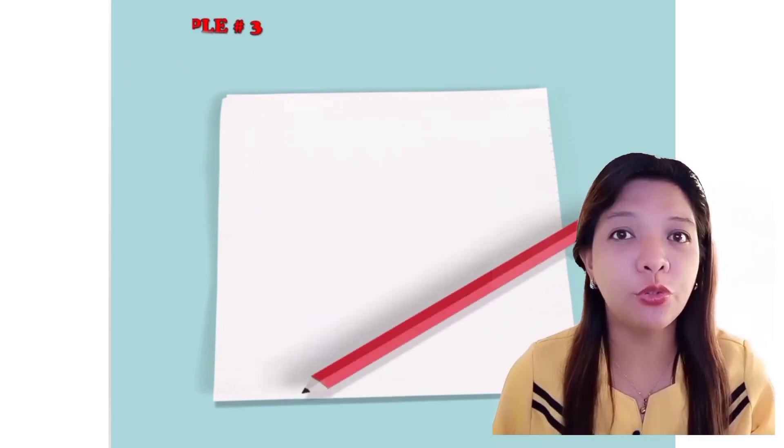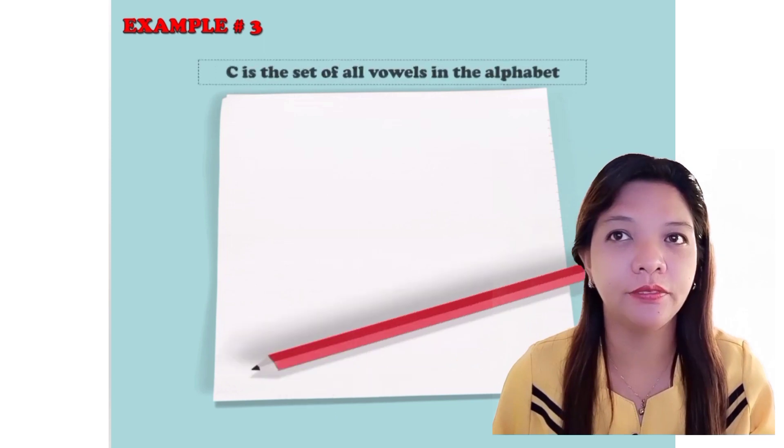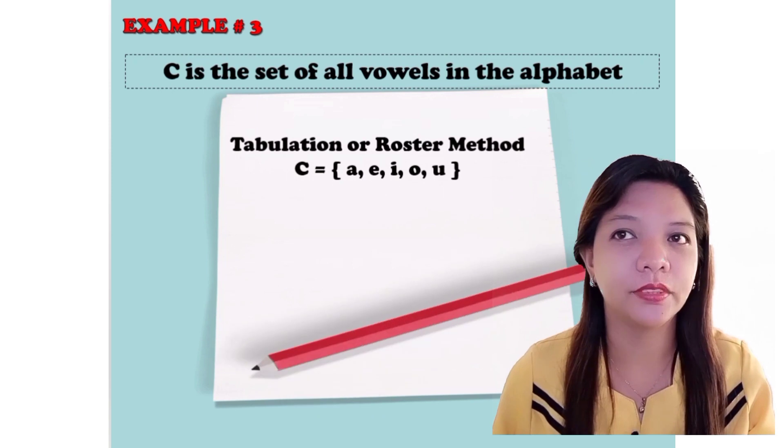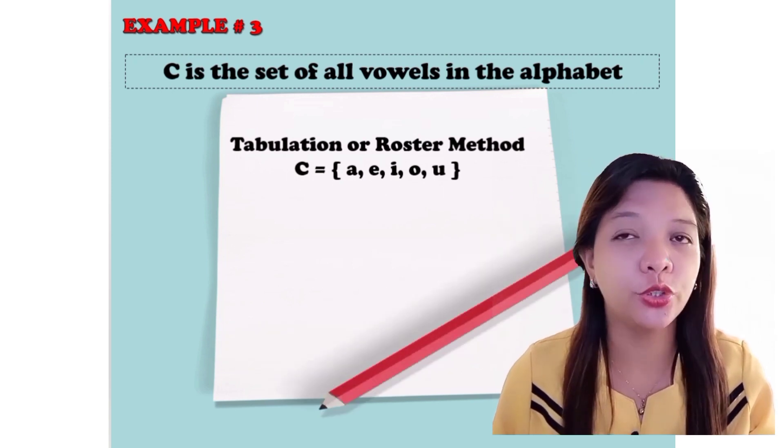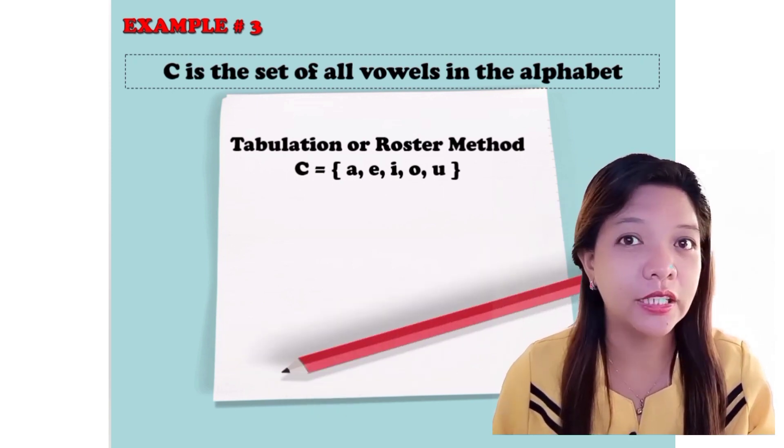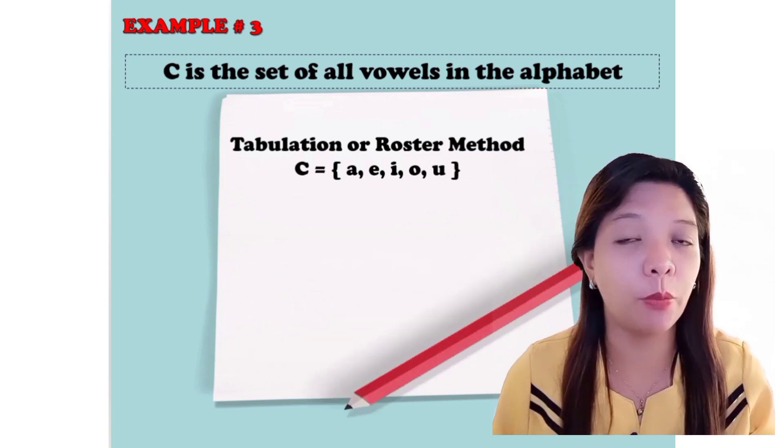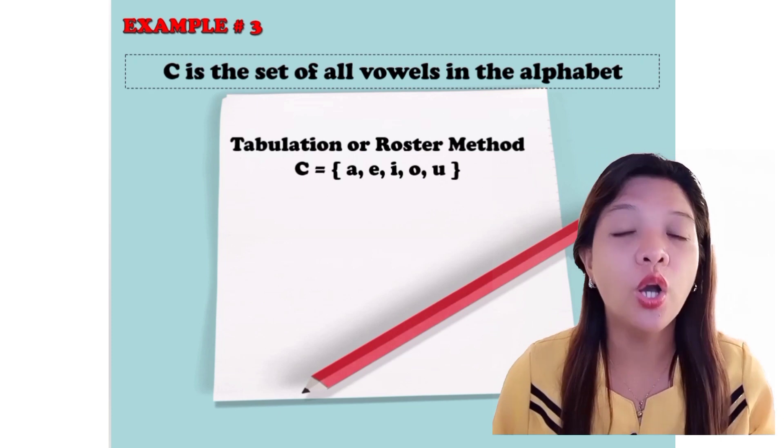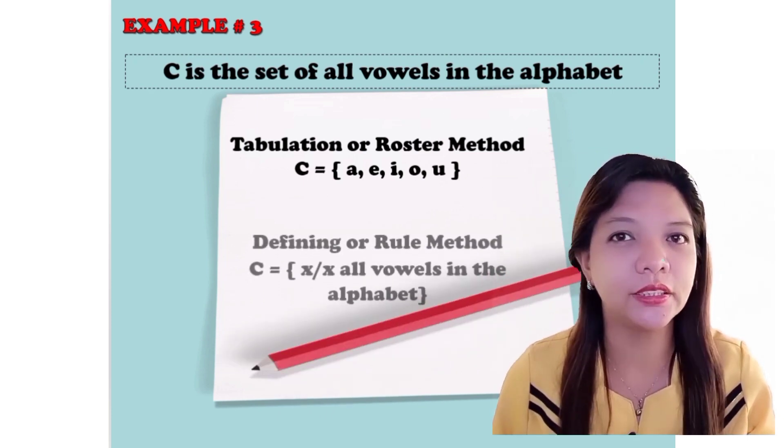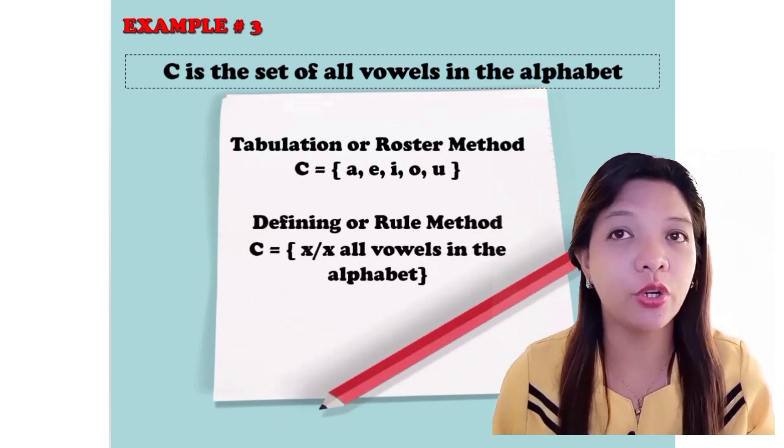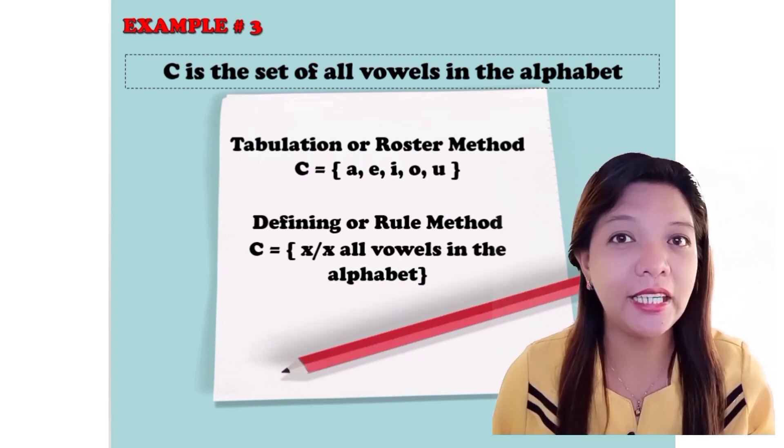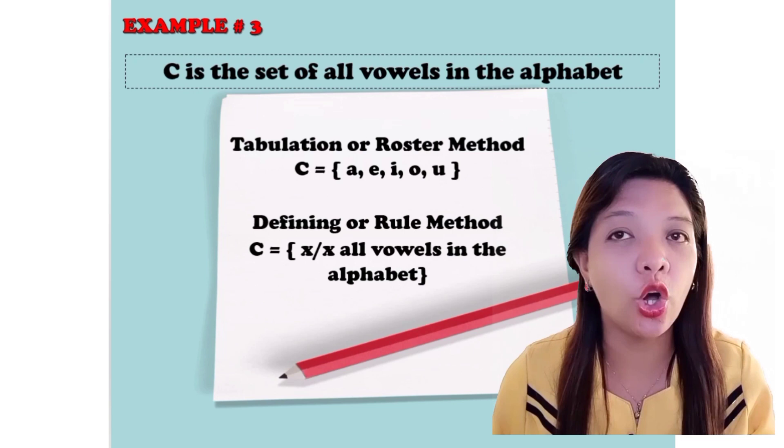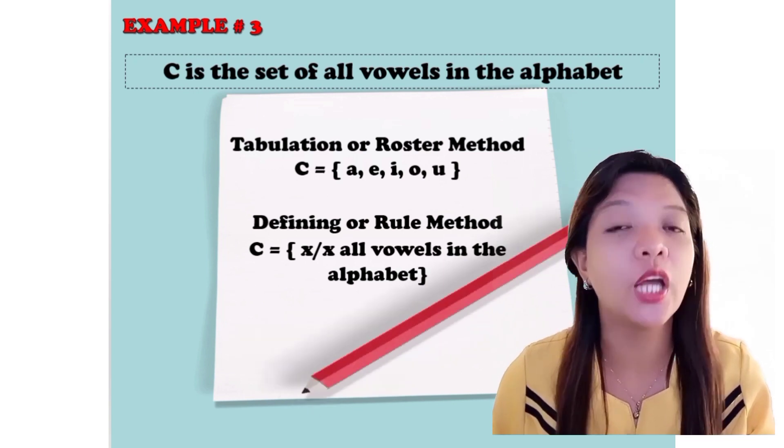Let's proceed to example number 3. C is a set of all vowels in the alphabet. Using tabulation or roster method, we have C equals open brace A, E, I, O, U, close brace. And using defining or rule method, C equals open brace X such that X, all vowels in the alphabet, close brace.